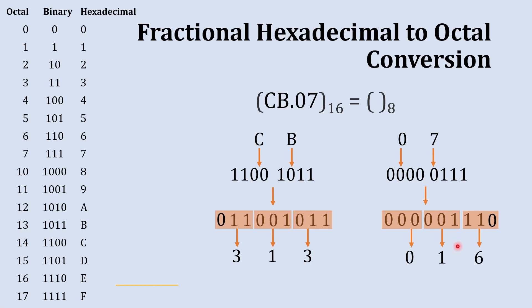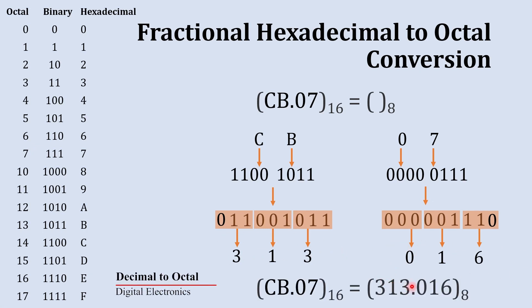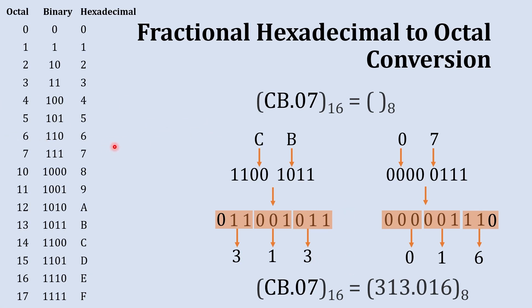Combining whole and fractional parts, 313.016 is the octal equivalent of the hexadecimal number. To explore more similar conversions, refer to the number system playlist, and to expand your knowledge in digital electronics through animated videos, refer to the digital electronics playlist.